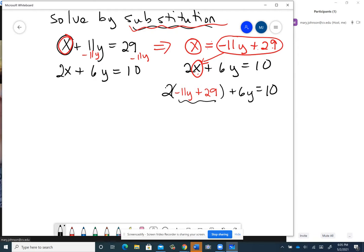All right, now the rest of this is just distributing, getting that so that I know what the y would be. So I'm going to distribute 2, so that would be negative 22y plus 58 plus 6y equals 10. Combine like terms, that would be negative 16y. They're on the same side, so I'm just combining them, plus 58 equals 10.